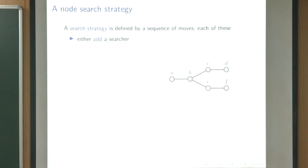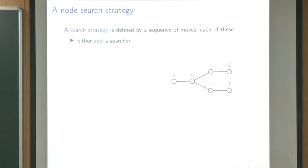We start with what a node search strategy is. Basically, we have a graph with some cops and robbers. There is a robber occupying some of the vertices of the graph, and we have some cops which we can place on vertices, trying to catch the robber.